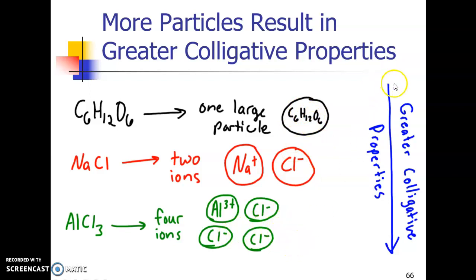Now that means that as you went from, if these were all the same concentration, as you went from glucose to sodium chloride to aluminum chloride, that the freezing point would decrease, the boiling point would increase, and the vapor pressure would decrease as you went through all of these in water at the same temperature and the same molal concentration.